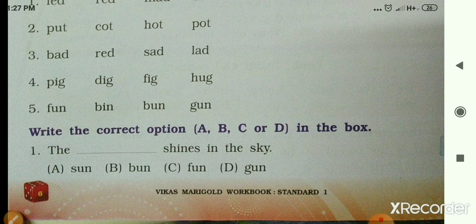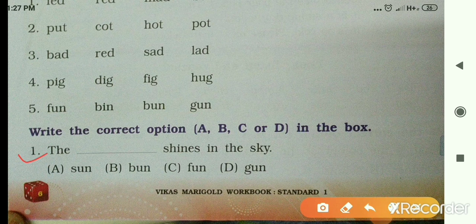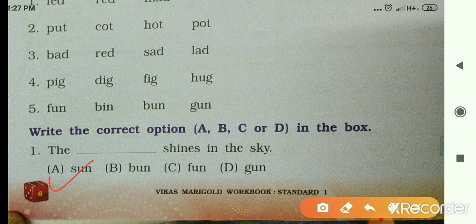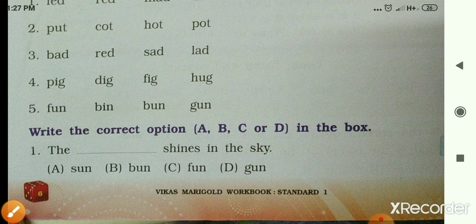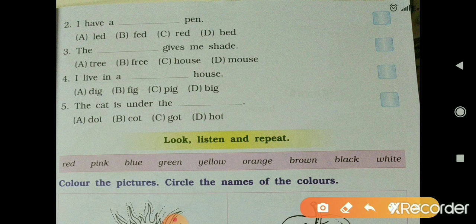Now, in exercise 5, write the correct option A, B, C, or D in the box. First one: the blank shines in the sky — A is sun, B is bun, C is fun, D is gun. The right answer is A, sun, so write A in the box. Second: I have a blank pen — A is lead, B is fed, C is red, D is bed. The right answer is red.